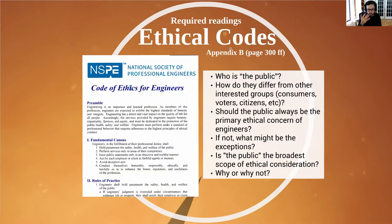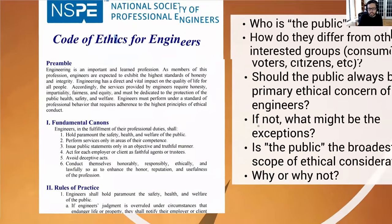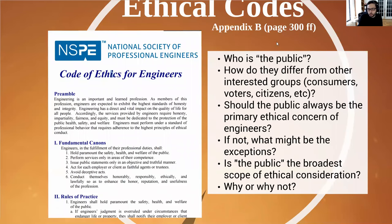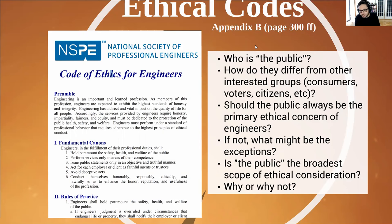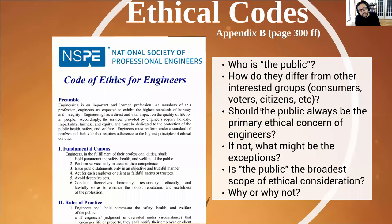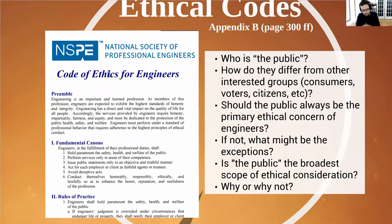For our purposes in talking about the scope of ethical consideration, we might ask: how far does this ethical code extend? For instance, it talks about the health, safety, and welfare of the public — but who is the public? How does the public differ from other groups we might be interested in? A business is often going to be interested in its clients, consumers, or end users. How do those people differ from the public? What about voters? Less than half of eligible voters voted in the last election, so what's the difference between the people who vote and the public generally? How about citizens — not all people in this country are citizens. Do they get counted in the public? These are questions about the scope of ethical consideration.